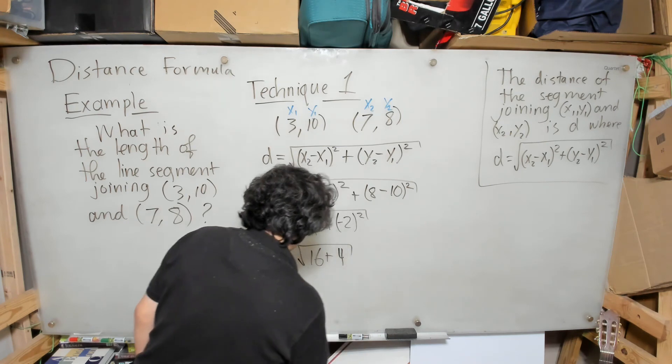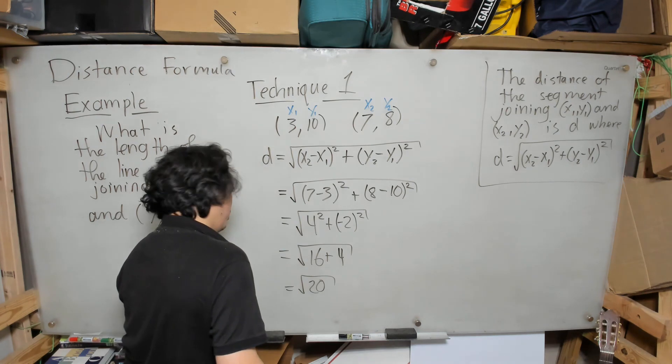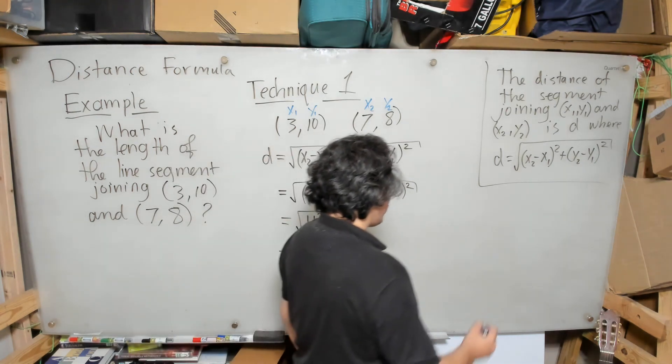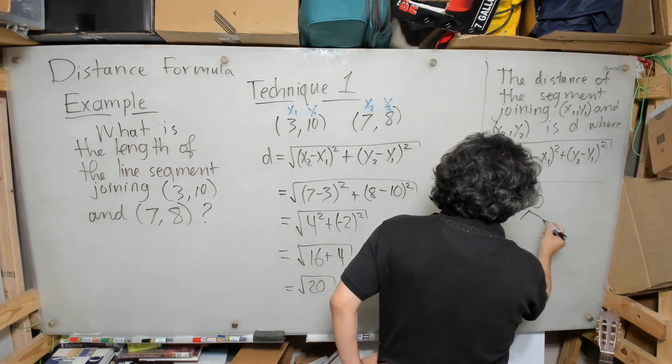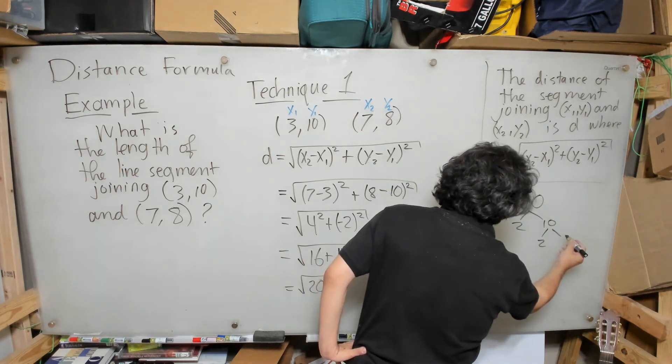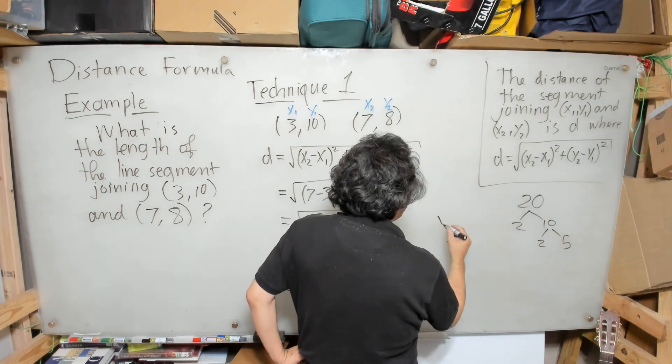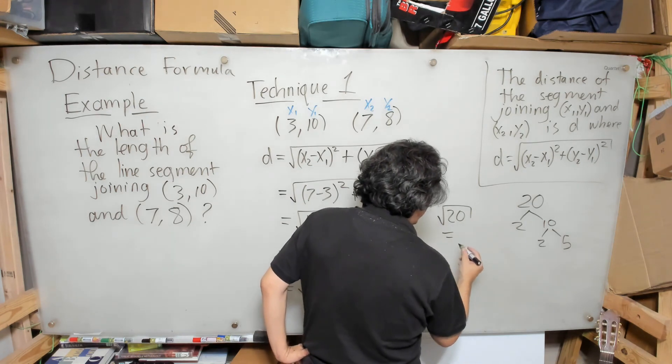So it will be 16 plus 4, which will be the square root of 20. Now here what I'm going to do is calculate the square root of 20. First of all, I need to find the factor tree of 20. I know that 20 is 2 times 10, and I know that 10 is 2 times 5.